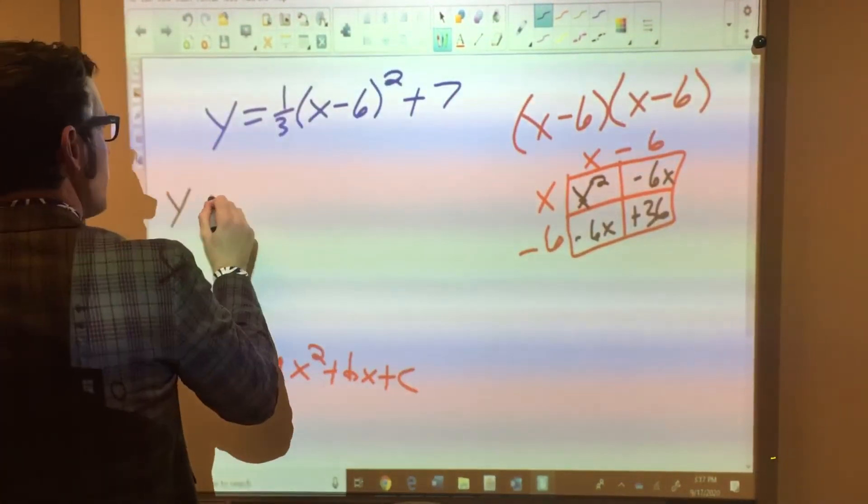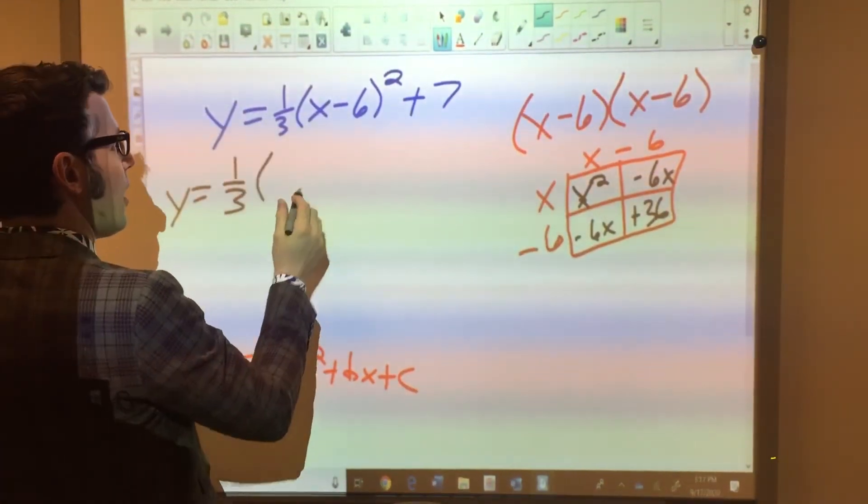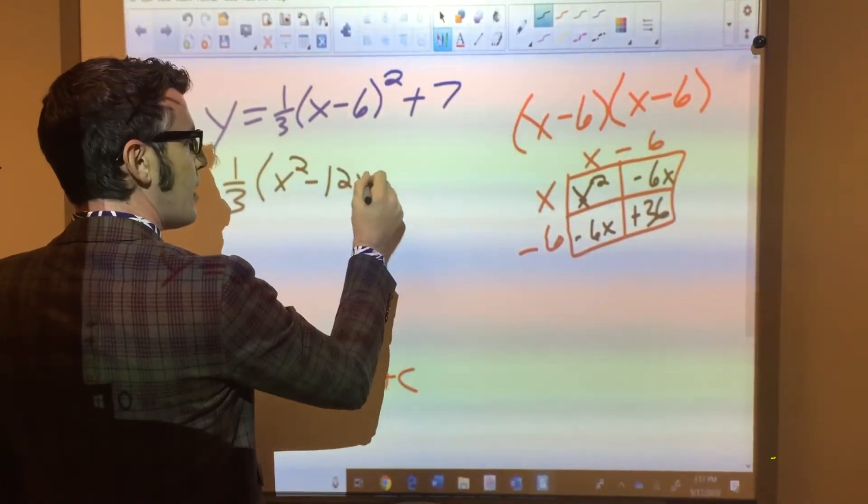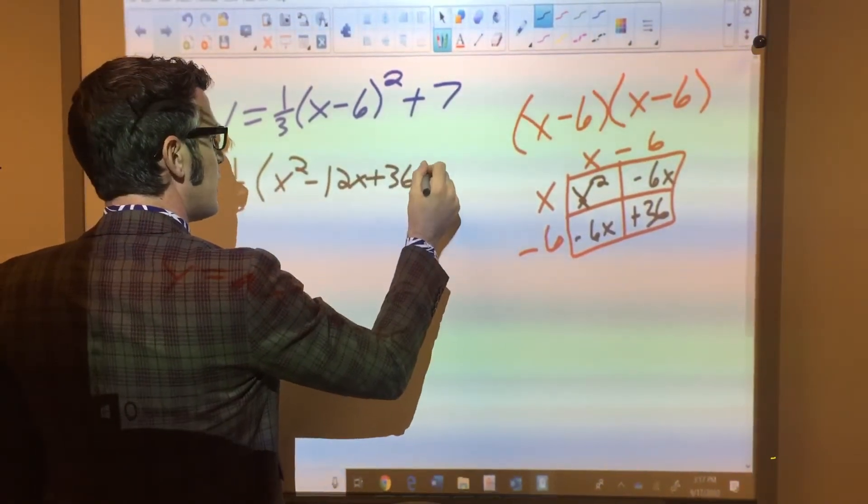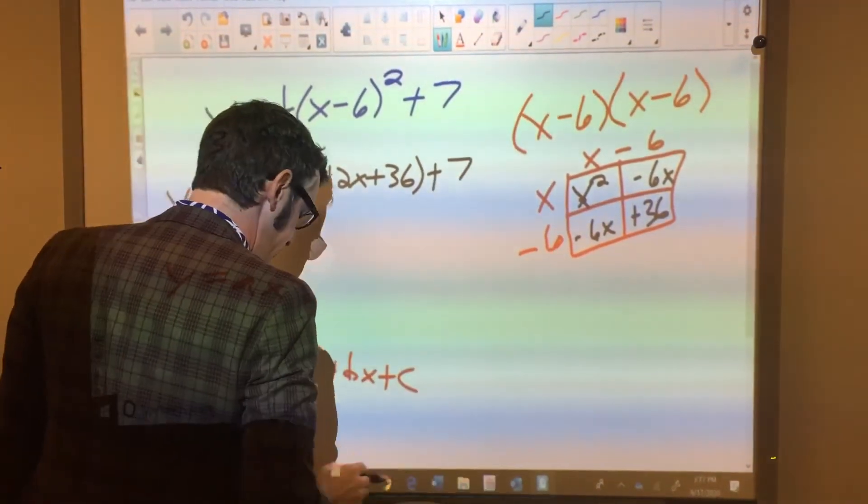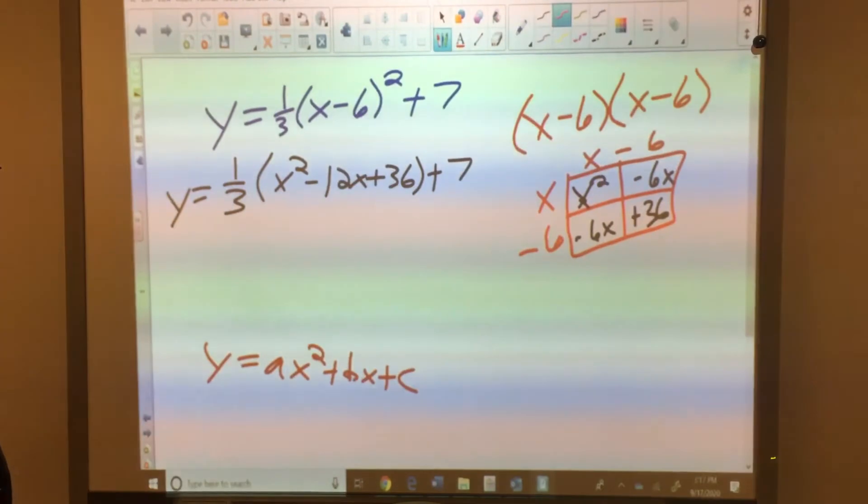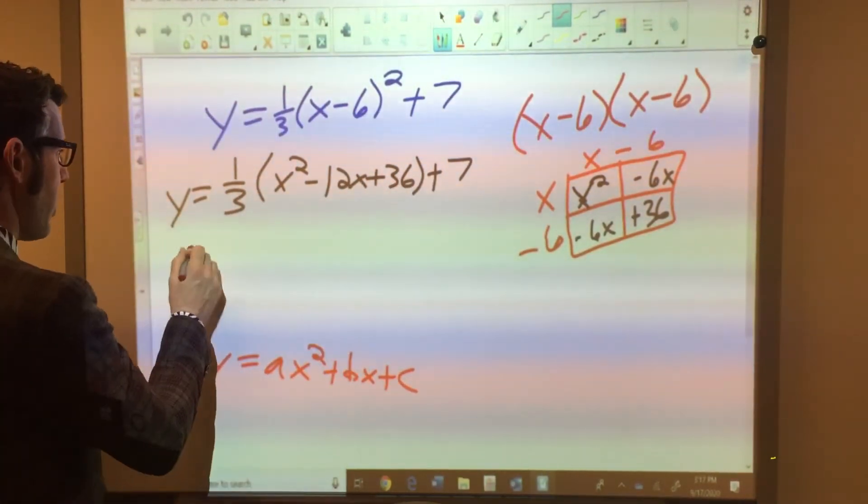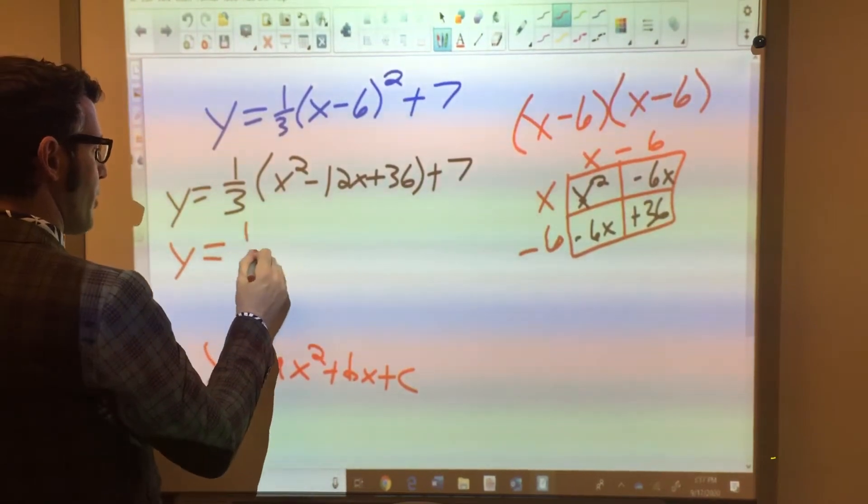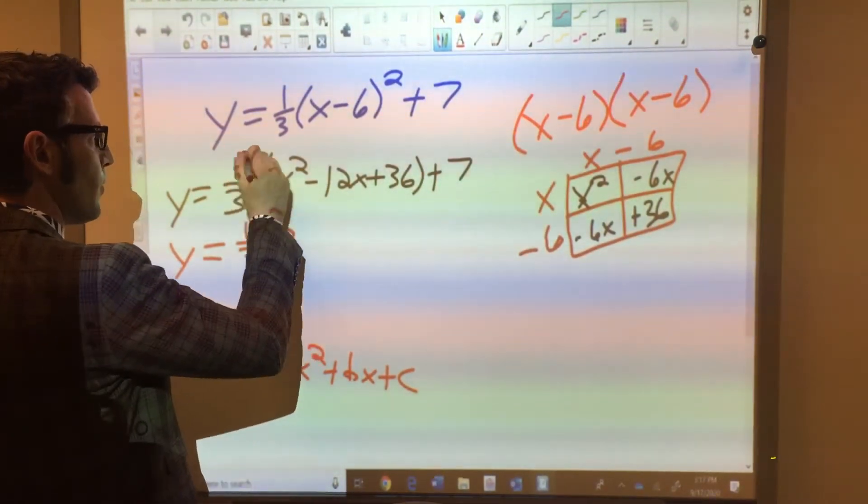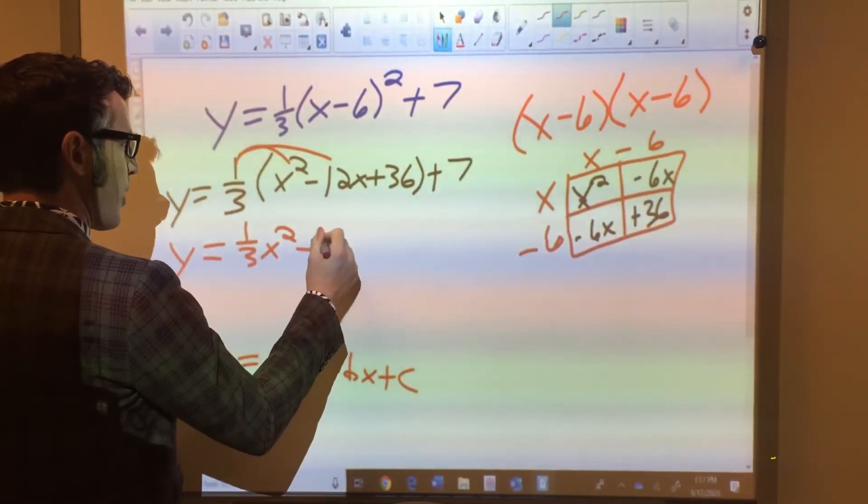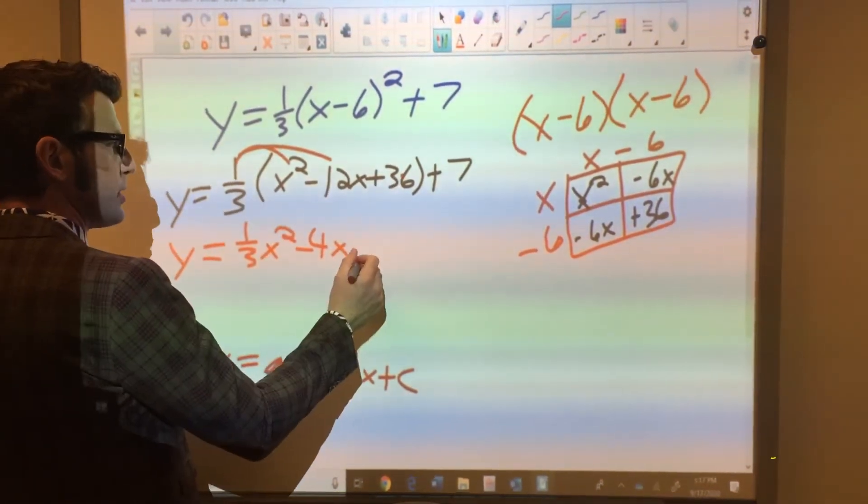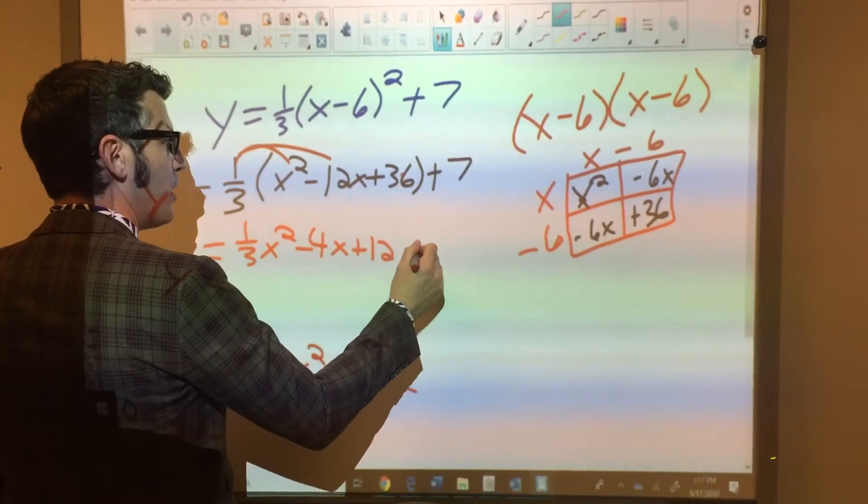So now I have y equals 1/3 of, let's see, we have x² - 12x + 36, plus 7. Almost there, we need to distribute this 1/3, so that's y equals 1/3 x². When I distribute it to this, that'll be -4x, because 12 divided by 3 is 4. 36 divided by 3 is 12, so that's +12, +7.